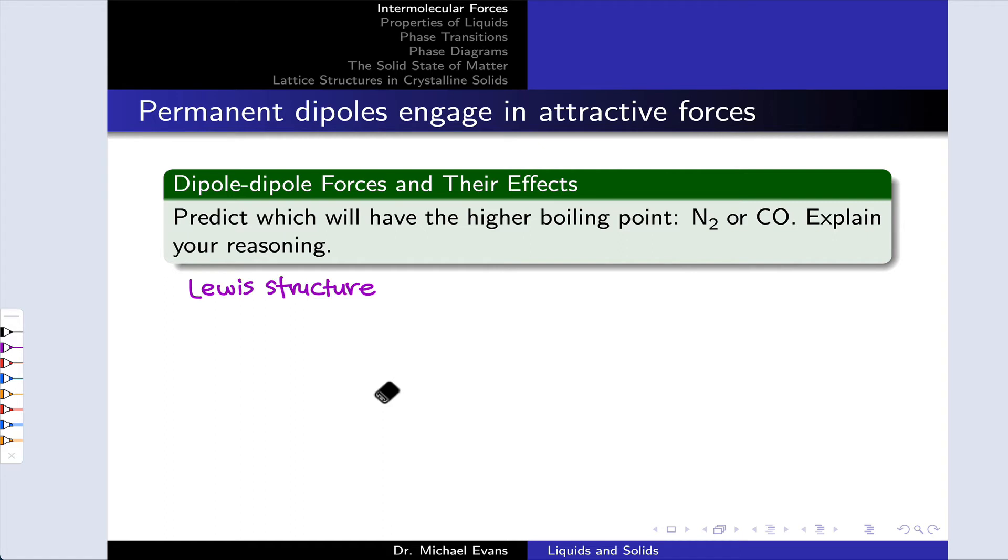We have to start with a Lewis structure, an understanding of how the atoms are connected, where the electrons are located in space, what's the geometry, all that good stuff. And we do need to know that three-dimensional geometry to appreciate whether the molecule is polar or non-polar. And this chain of reasoning we've applied before going from the Lewis structure to a conclusion about whether the molecule is polar or not.